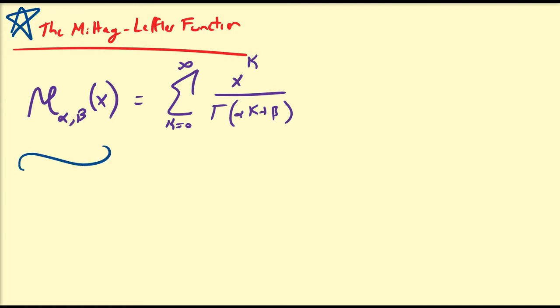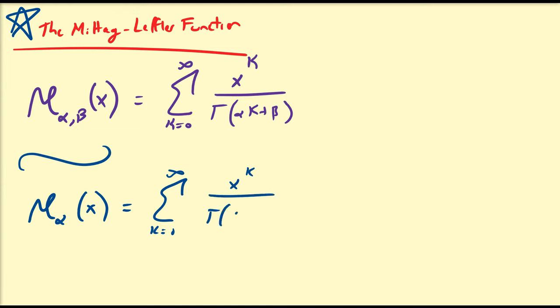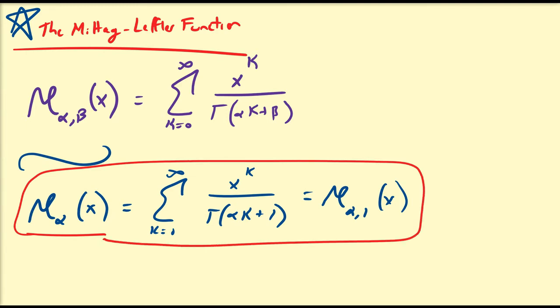For this video and the next, we're only going to be focusing on the one-parameter Mittag-Leffler function. In particular, E_alpha(x) is going to be equal to the sum from k equals zero to infinity of x^k all divided by gamma(alpha·k + 1). So we let beta equal to one. Every time you see E_alpha(x), that's focusing on the parameter alpha in front of the index k inside the gamma function.